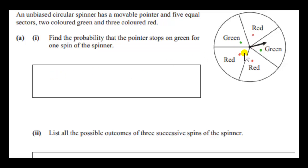So basically, we want the proportion of the angles that are green. Well, that's two out of the total number, which is five. So two-fifths of the time, the pointer will point to a green sector.